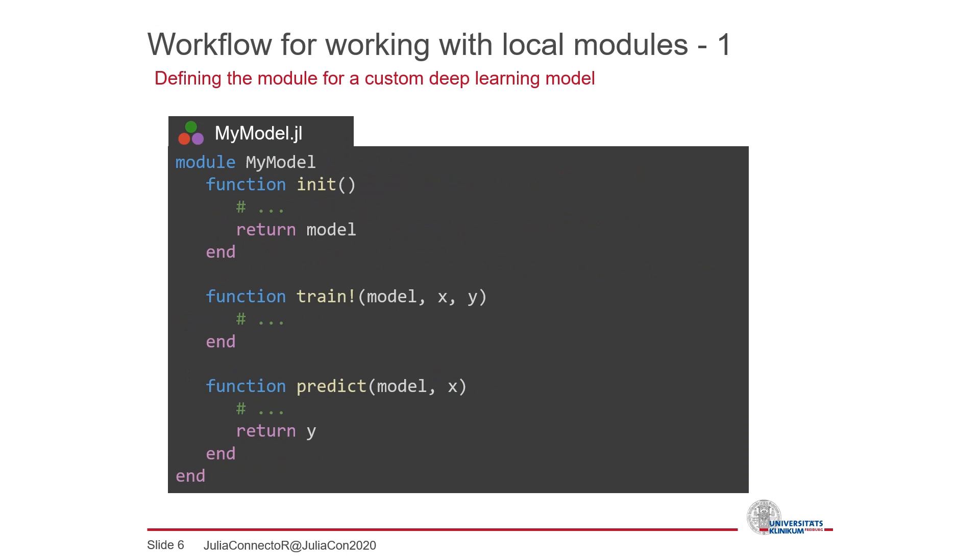When developing a complex deep learning model we will usually have some function to initialize the model, a training function and a way of evaluating or using the model, for example predicting some labels. It makes sense and is also more efficient to collect Julia code like this in a module. Using modules is also a nice way to keep your Julia workspace clean when working interactively, because all definitions in a module are reset every time the module is imported.